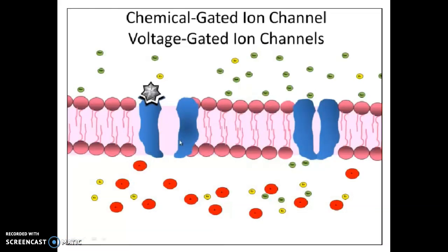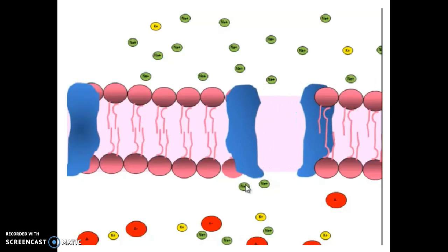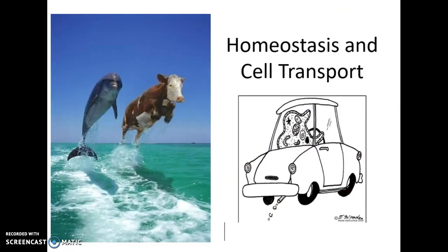Sodium can come rushing in and affect another type of ion channel — a voltage-gated channel. When the voltage around this ion channel reaches a specific threshold level, it too can open up and ions can come rushing in. An electrical signal can open and control whether an ion channel is open.